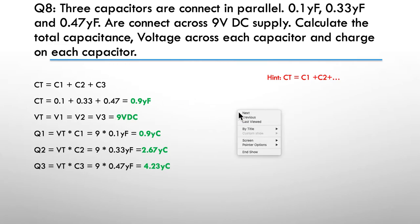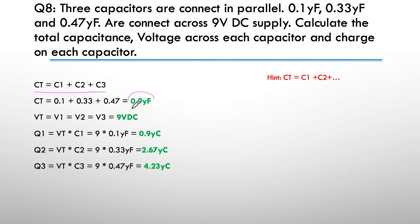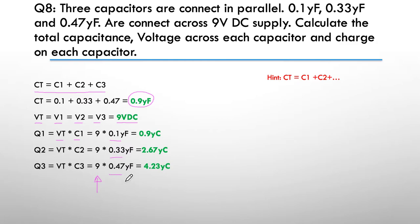Here's our answer. C total: we just add up the three capacitances and get 0.9 microfarads. Three capacitors are connected in parallel, therefore voltage across each is the same — the answer is 9 volts across each. For the charge in each capacitor, Q equals voltage times capacitance. We have 9 volts across each, so we multiply each capacitance by 9, giving 0.9 microcoulomb, 2.97 microcoulomb, and 4.23 microcoulomb.